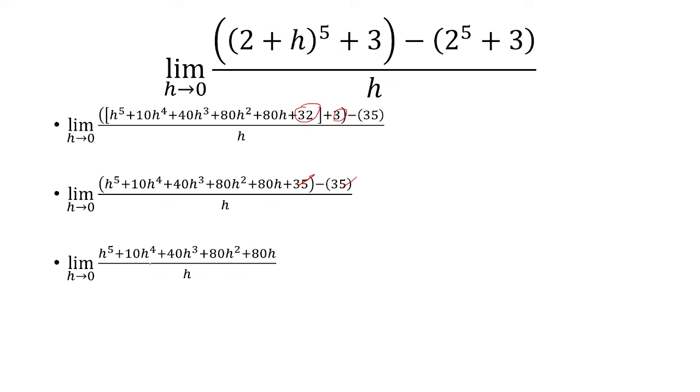and we can factor out an h from the numerator. So factoring out an h gives us h to the 4th plus 10h cubed plus 40h squared plus 80h plus 80, and now the h's are going to cancel.